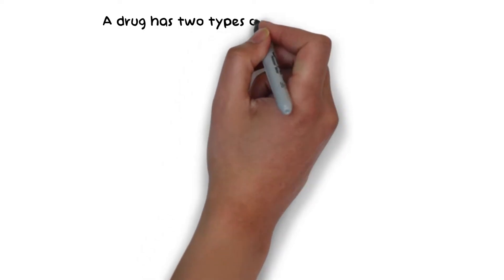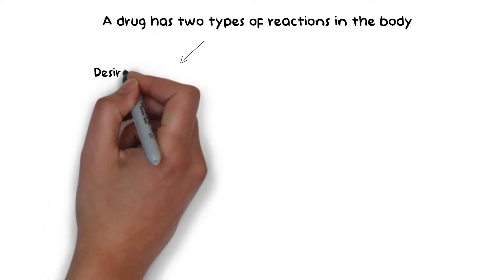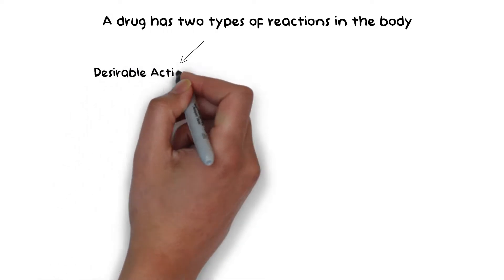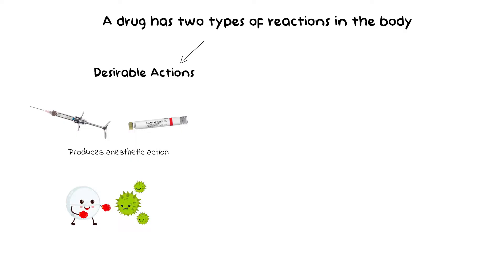When a drug is administered in the body, two types of reactions are observed. First, the desirable actions, which are the clinical effect of the drug and the reason why we use it — like the desirable action of a local anesthetic is to produce the anesthetic effect so that the patient will not feel pain during the procedure, or the effect of an antimicrobial agent is to kill microorganisms. These are known as the desirable actions.